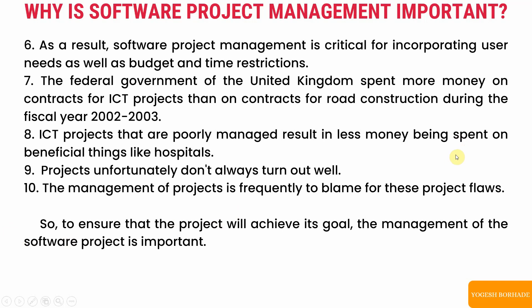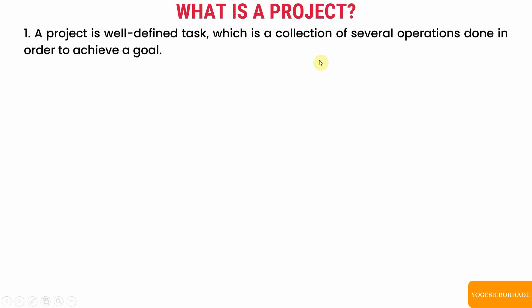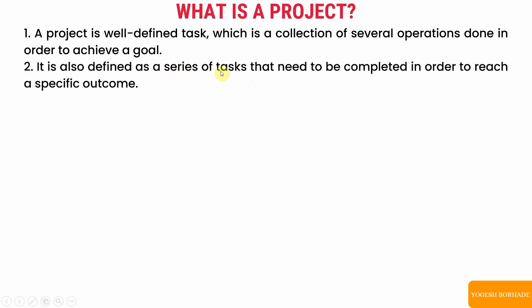Now we'll see what is a project. A project can be considered as a series of tasks performed in some order to achieve a goal. More formally, a project is a well-defined task which is a collection of several operations — such as requirement gathering, planning, execution, implementation, testing, and maintenance — done in order to achieve a final product or goal.